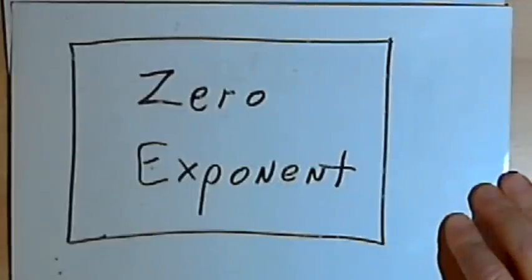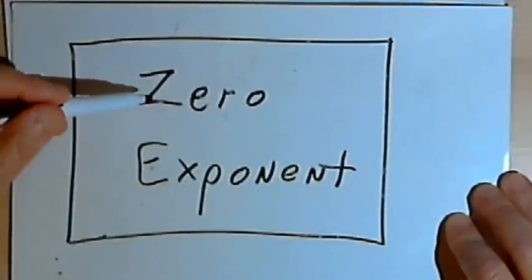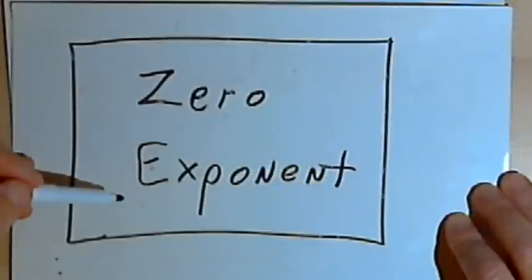This video is provided as supplementary material for courses taught at Howard Community College. And in this video I want to talk about what happens when we use a zero as the exponent for a number.